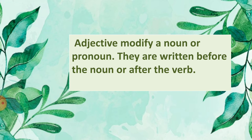As we all know, adjectives modify a noun or a pronoun. They are written before a noun or after the verb. We know that adjectives modify or describe a noun or a pronoun, and an adjective is always written before a noun and after the verb. This helps us to identify the adjective in the sentence.